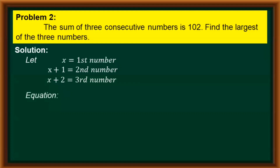And the third number is x plus 2. We now create our equation. Since in the problem it is stated that their sum is equal to 102, we add the first number x, the second number x plus 1, and the third number x plus 2, and the sum equals 102.